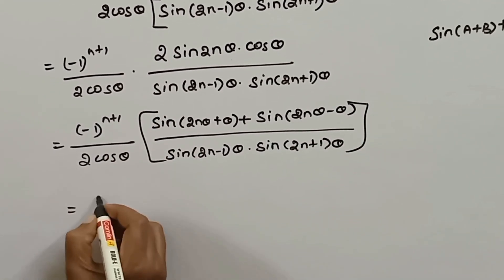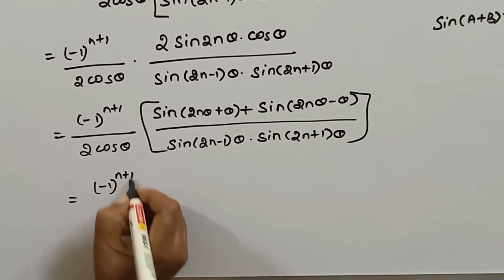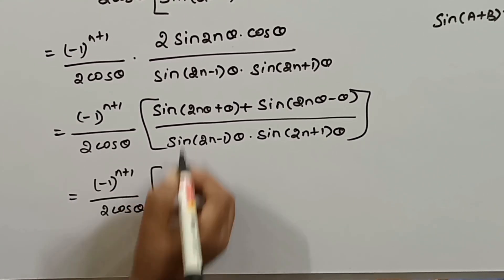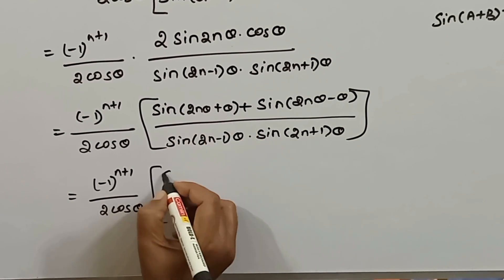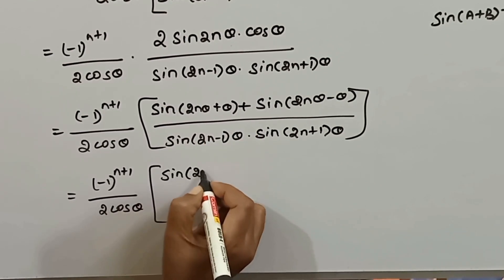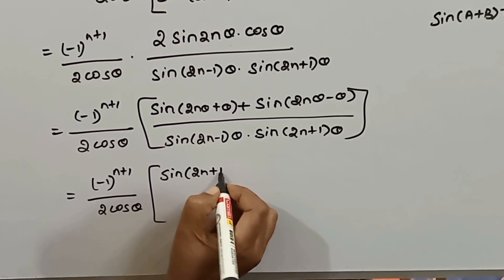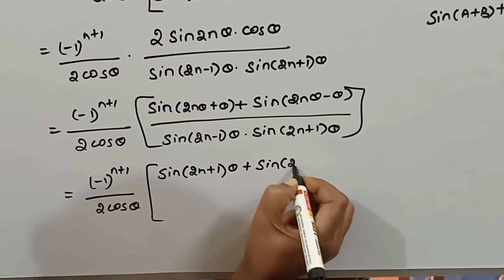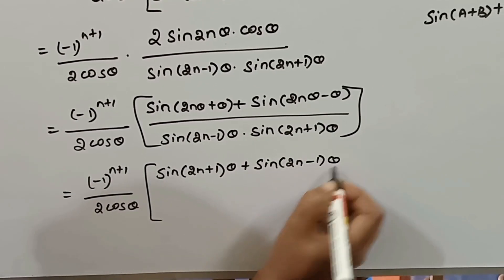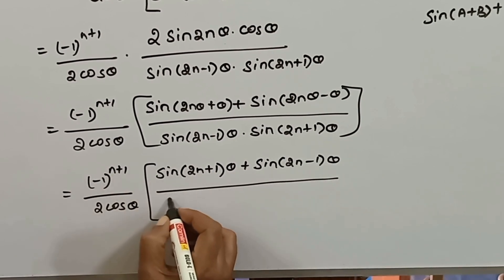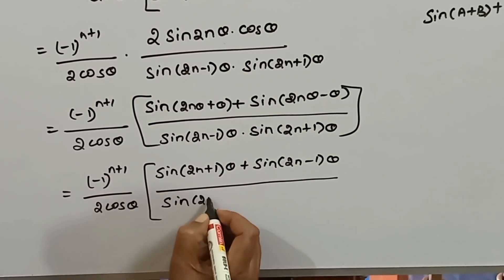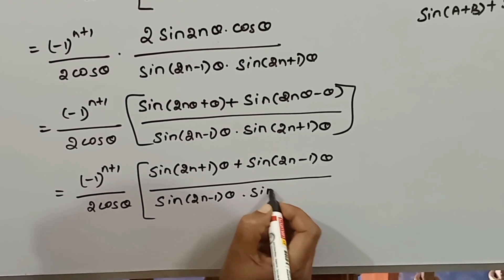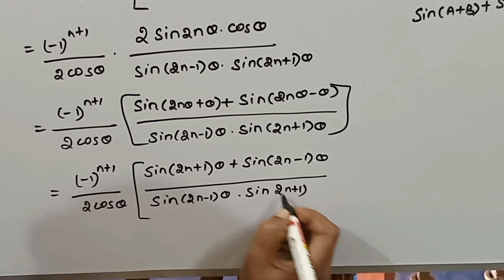We fix the term: minus 1 whole power n plus 1, divided by 2 cos theta. In the bracket, the common mark gives sin(2n+1) theta plus sin(2n-1) theta in the numerator, and sin(2n-1) theta into sin(2n+1) theta in the denominator.